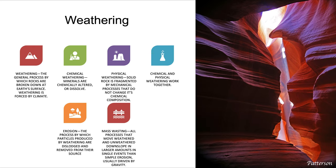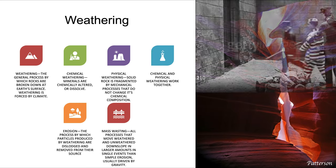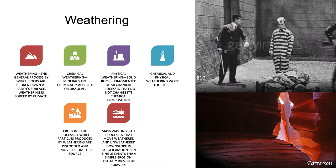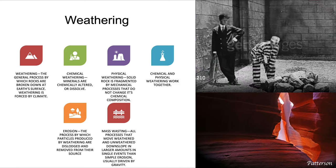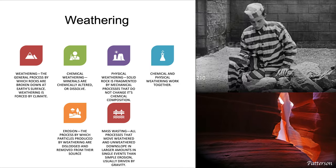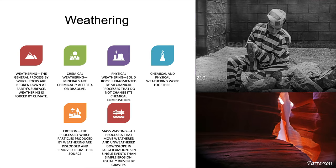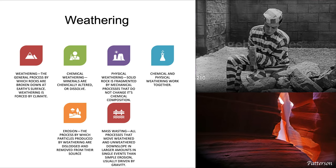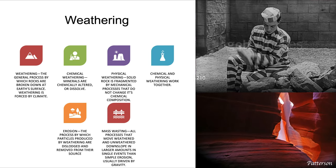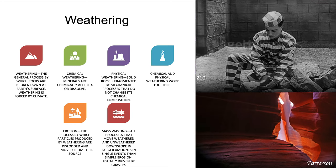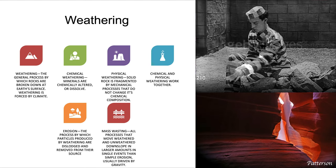Chemical weathering is such that minerals are chemically altered or dissolved — they change into another chemistry, or they become ions in a solution. Physical weathering, on the other hand, is when solid rock is fragmented by mechanical processes that do not change its chemical composition. It's the equivalent of breaking a rock with a sledgehammer, as opposed to cooking it or dissolving it in a vat of chemicals. Chemical and physical weathering work together to change a rock from its original state to its weathered state.